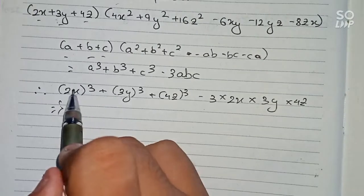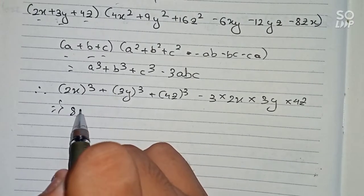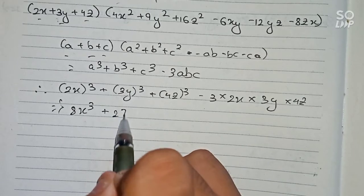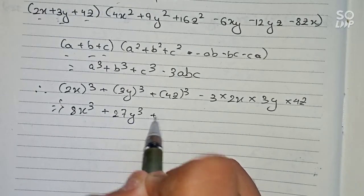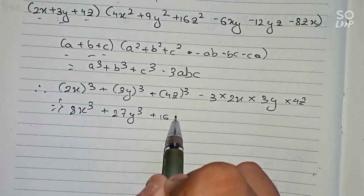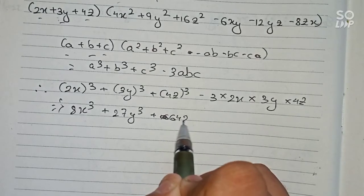So it becomes: 2 to the power 3 is equal to 8x³, plus 3 to the power 3 is equal to 27y³, plus 4 to the power 3 is equal to 64z³.